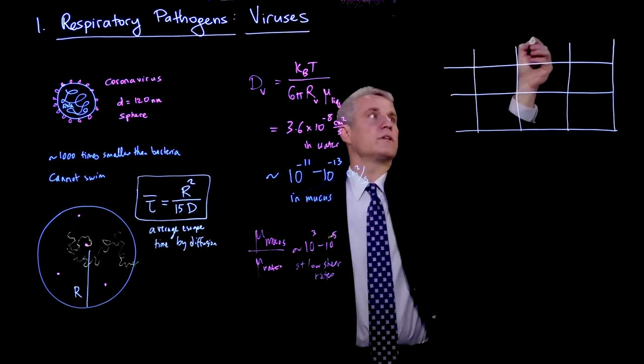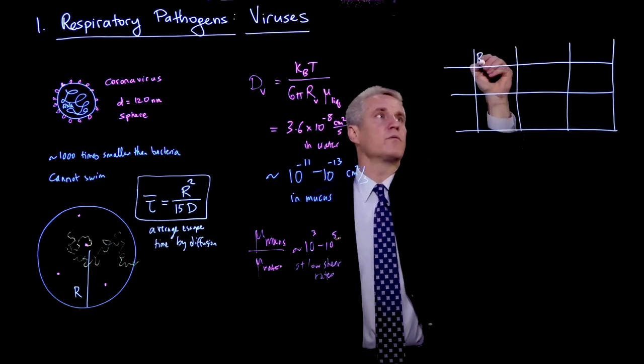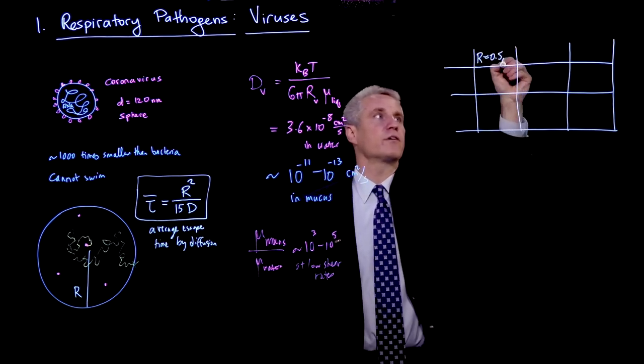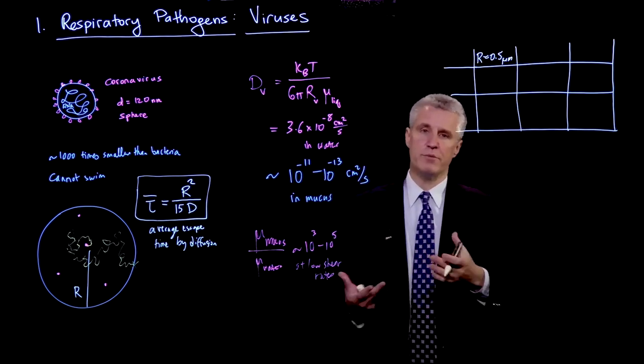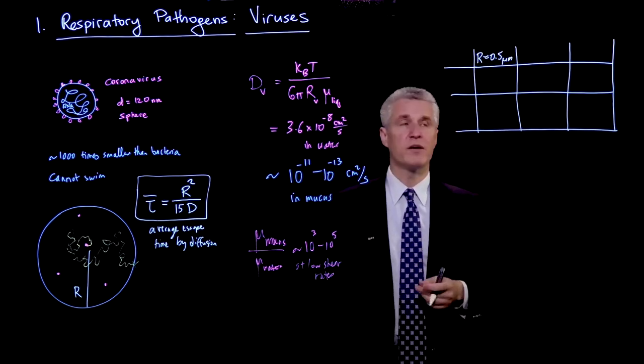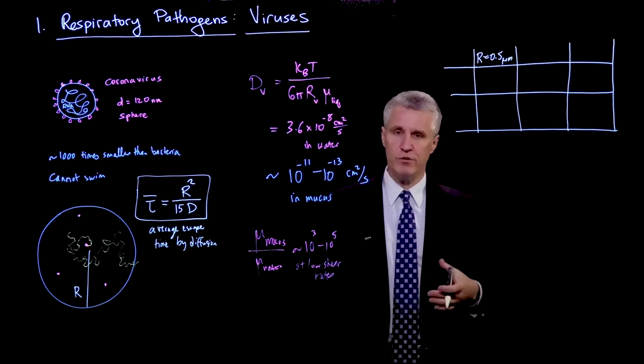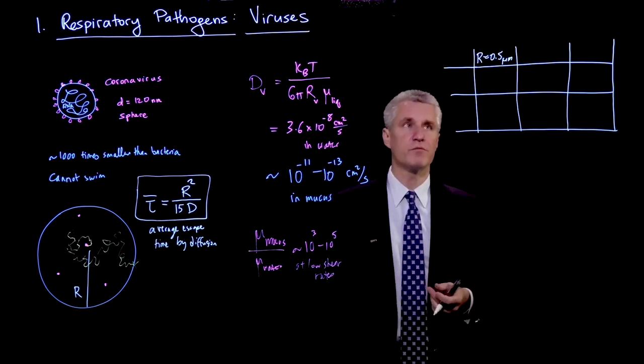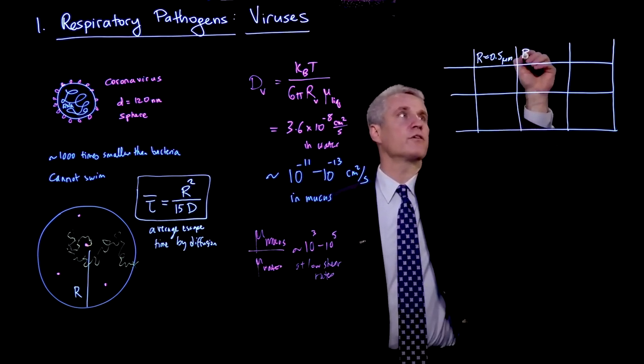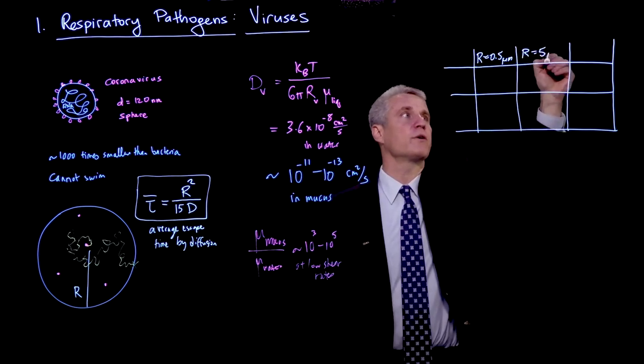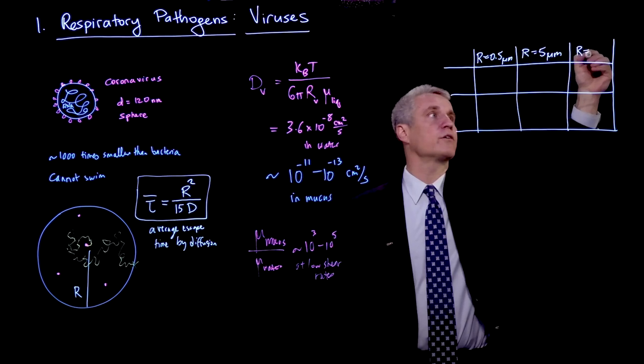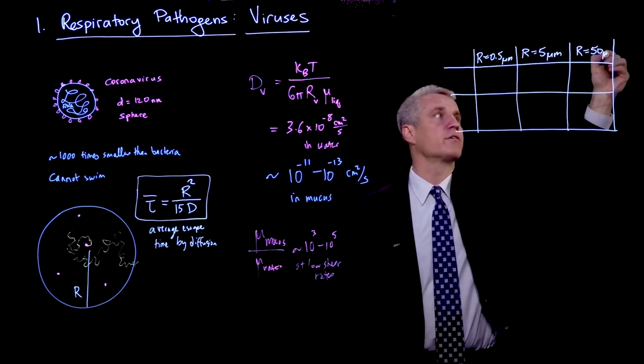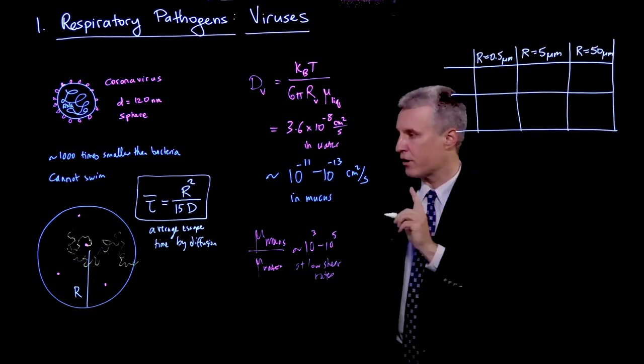So let's look at the radius. First, let's consider here 0.5 microns or 500 nanometers. So that would be a 1 micron diameter droplet. So that would be kind of a typical aerosol droplet coming from breathing. Let's also consider larger droplets. So let's look at 5 micron, which is kind of on the upper end of the aerosol range. And then we could look at 50 microns.